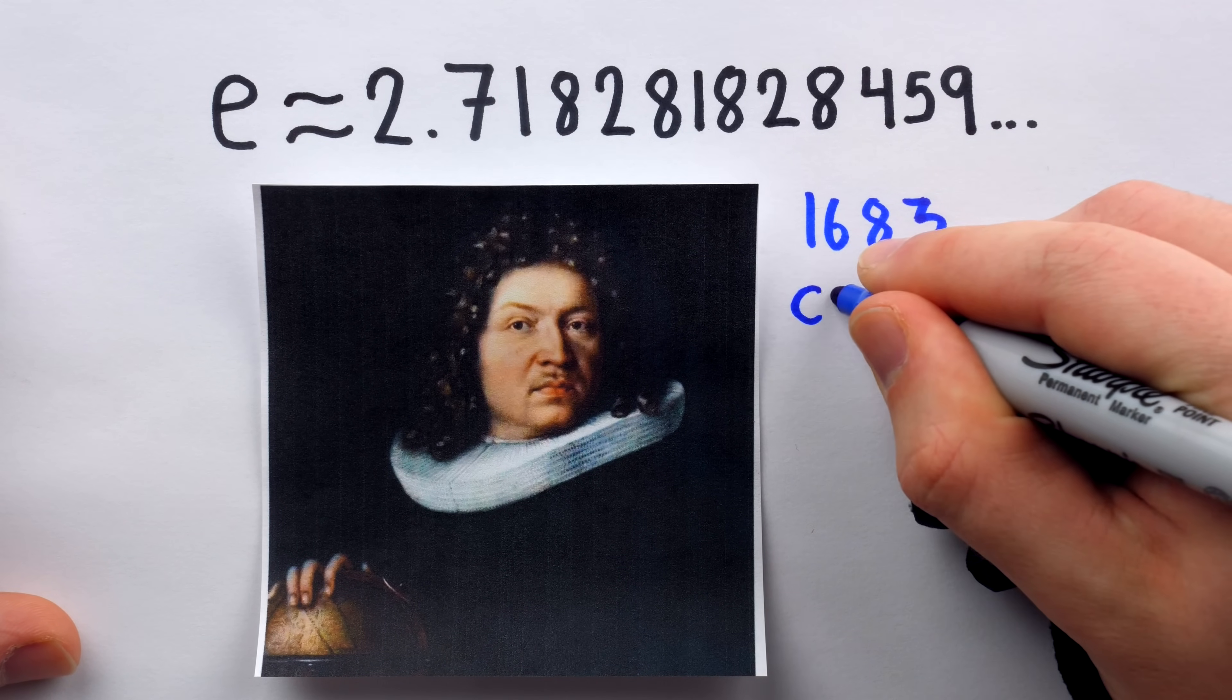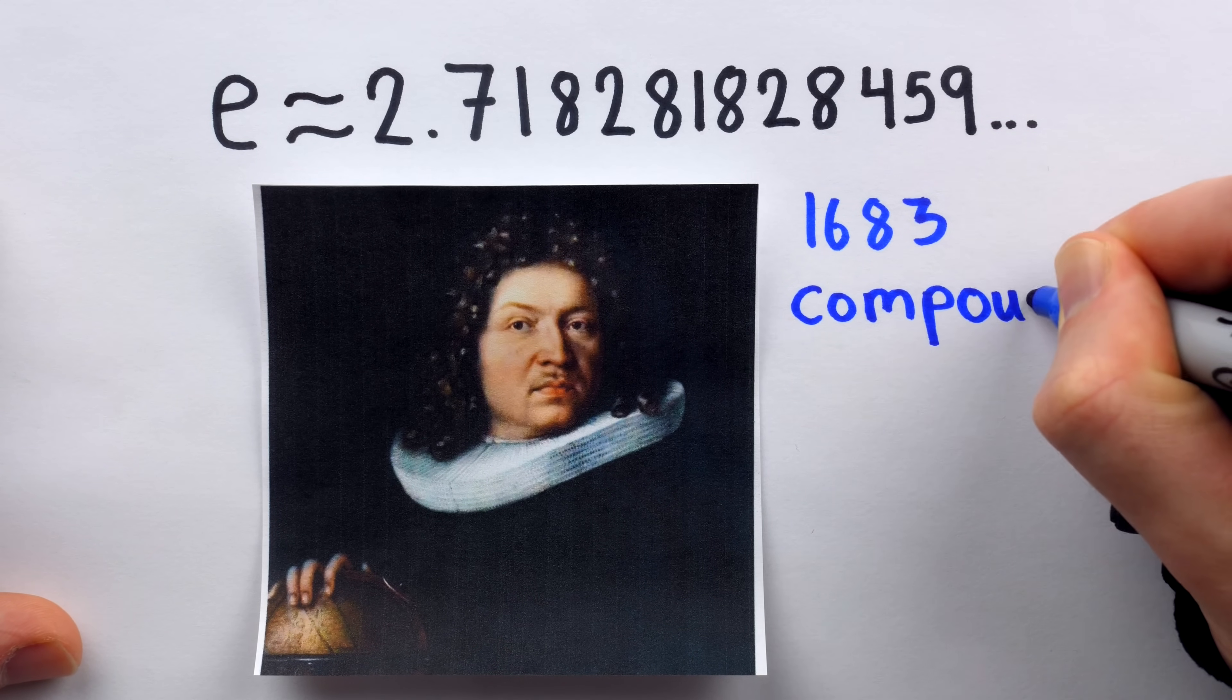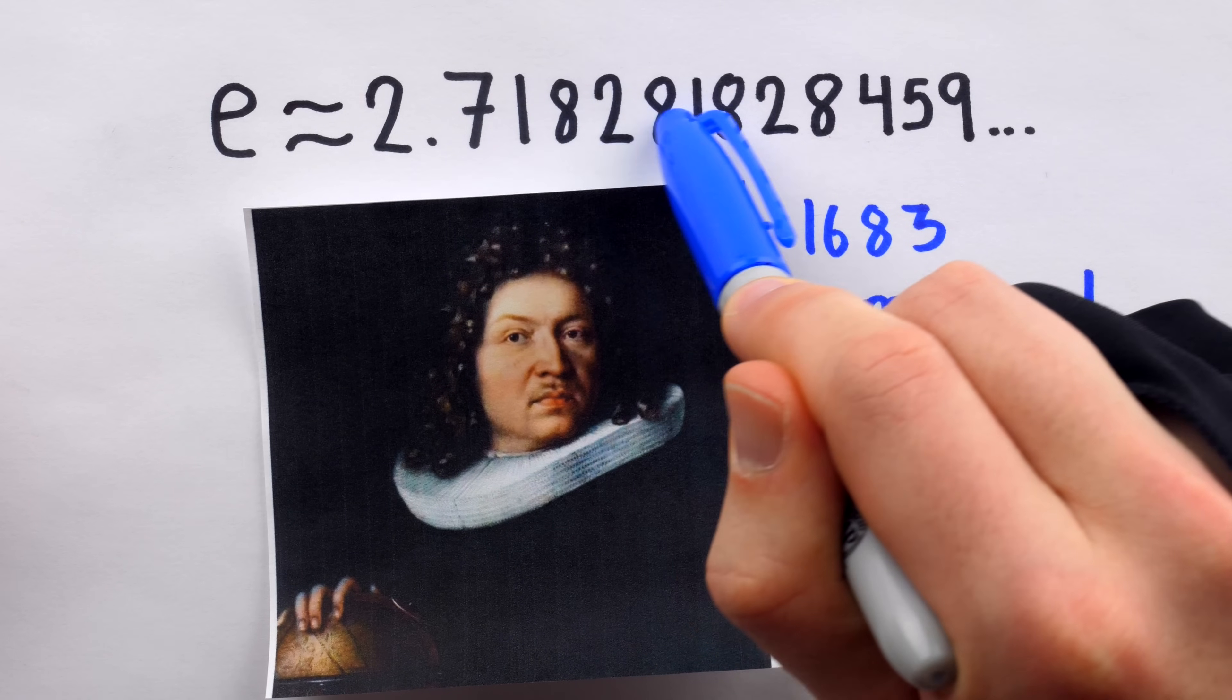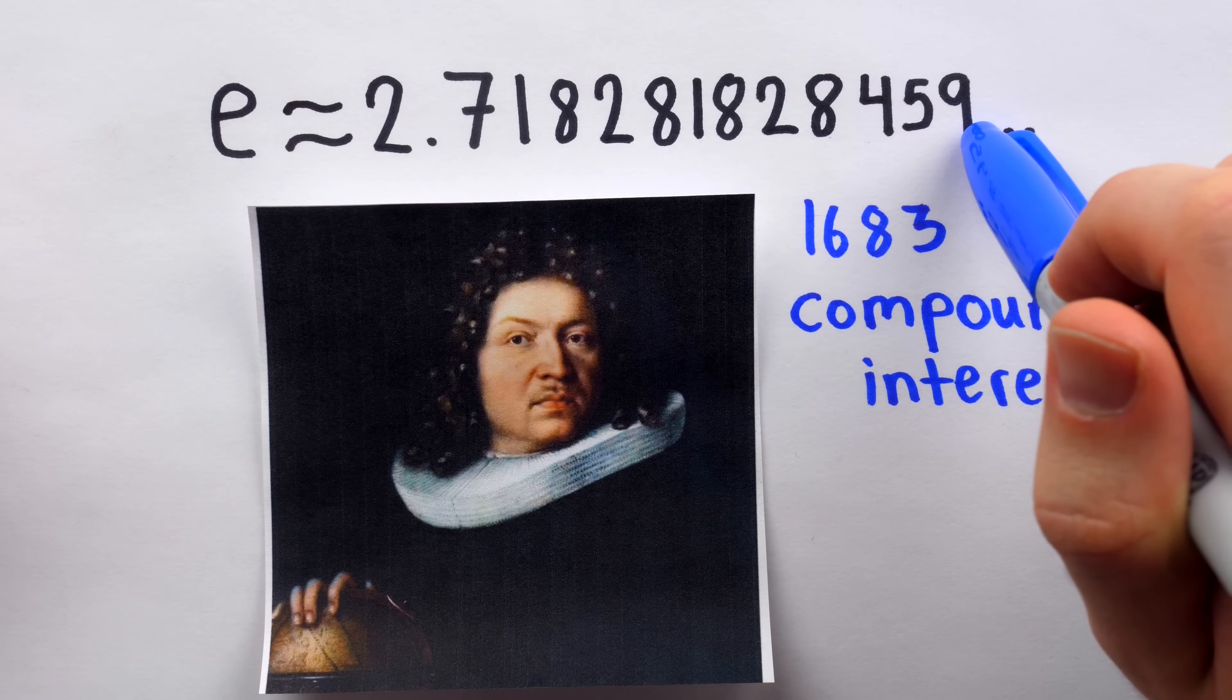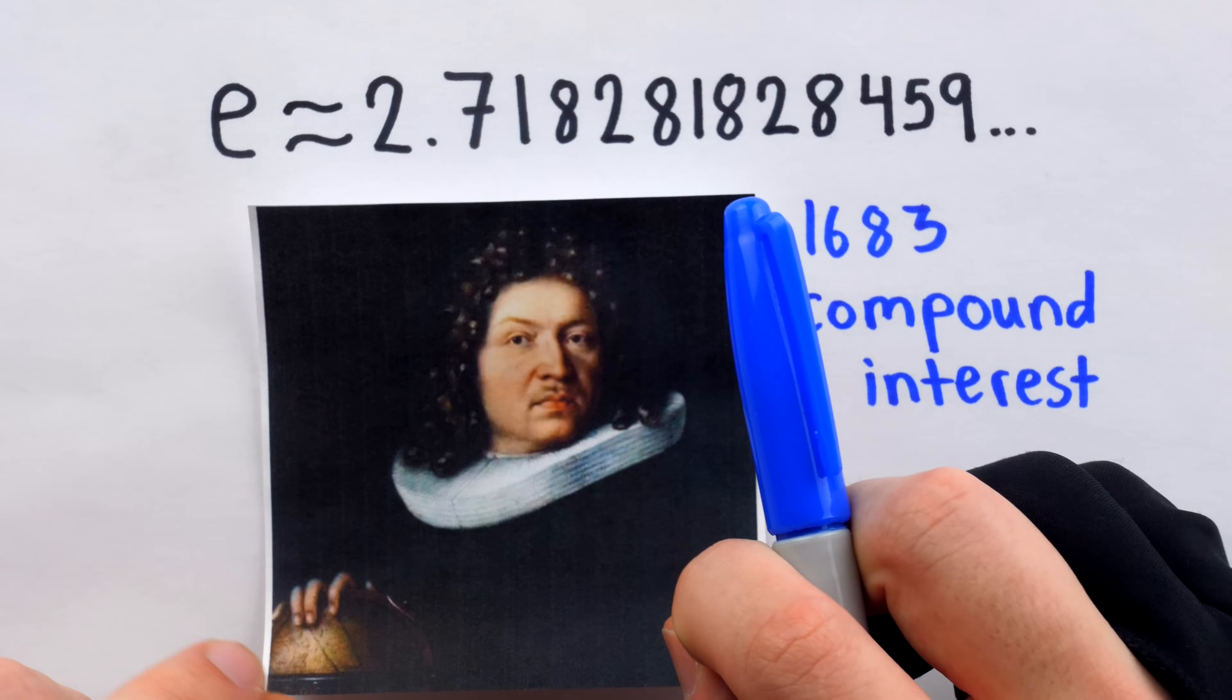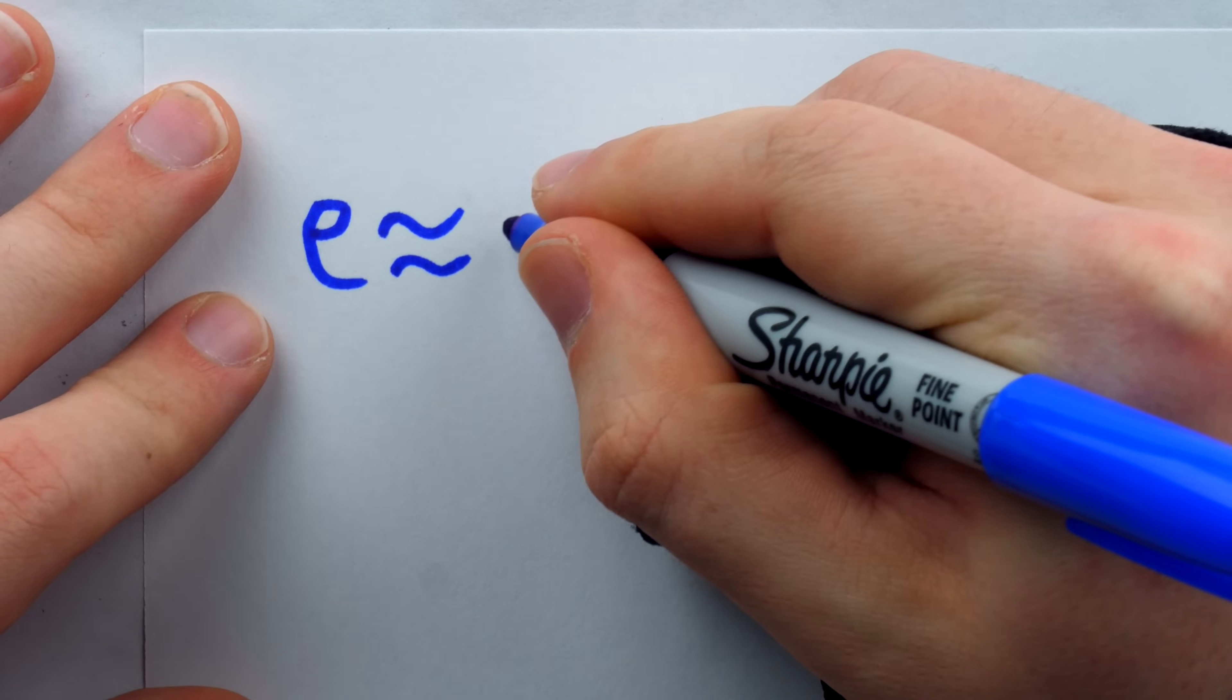It came up when Jacob was investigating compound interest, and we will come back to that later. Since the decimal expansions of irrational numbers just go on and on, one of the interesting topics you can look at with regard to these numbers is methods of approximating them. And just like pi, e has many interesting approximations.